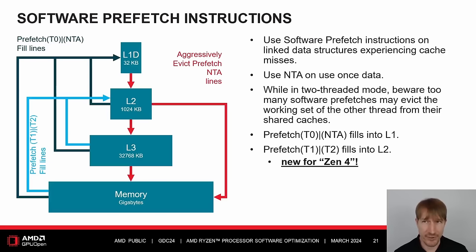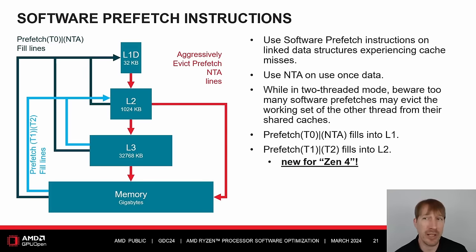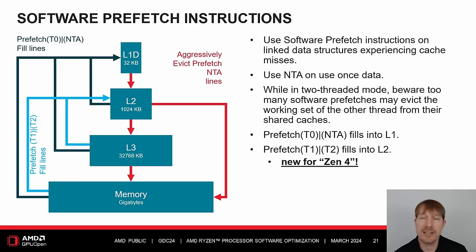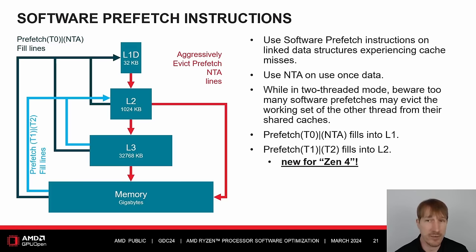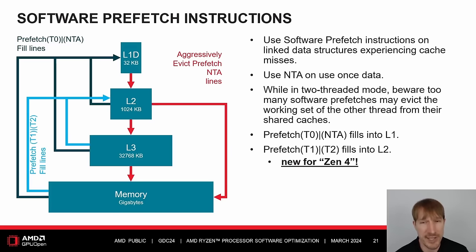Use software prefetch instructions on linked data structures experiencing cache misses. Use NTA on use-once data. While in two-threaded mode, beware that too many software prefetches may evict the working set of the other thread from their shared L1 data and L2 caches. Prefetch T0 and NTA fill into the L1 data cache. Prefetch T1 and T2 fill into the L2 cache — a new feature for Zen 4. For previous generations of Zen processors, prefetch T1 and T2 filled into the L1 data cache. Cache details including ways, associativity, inclusion policy, and write policy are described in the AMD software optimization guides.